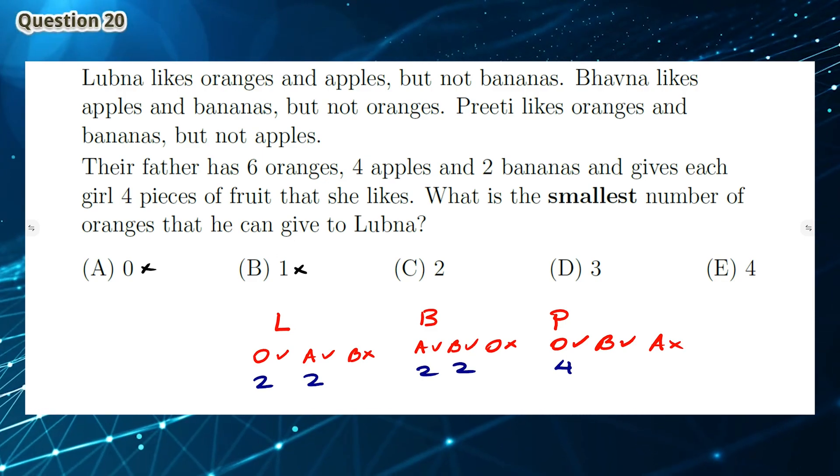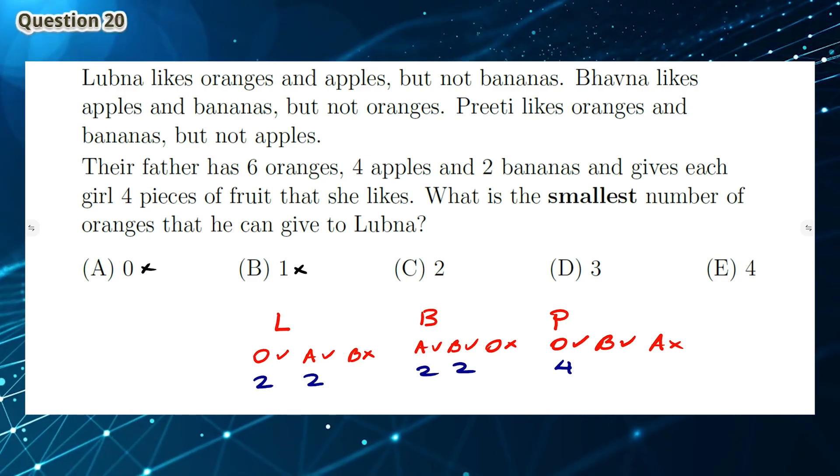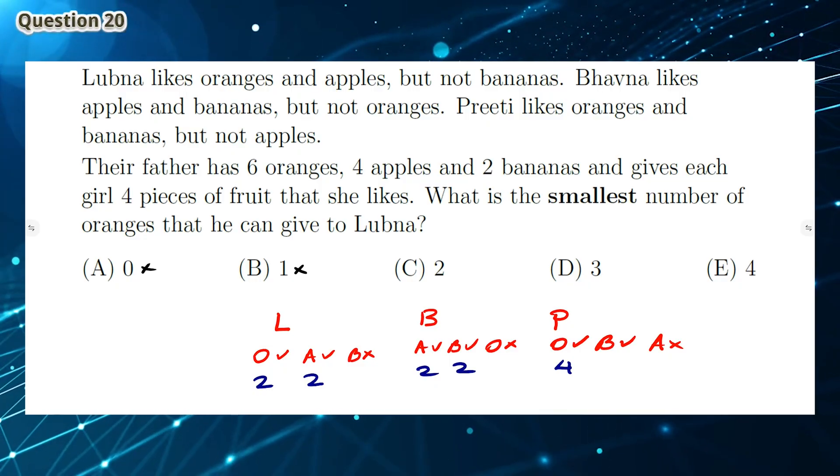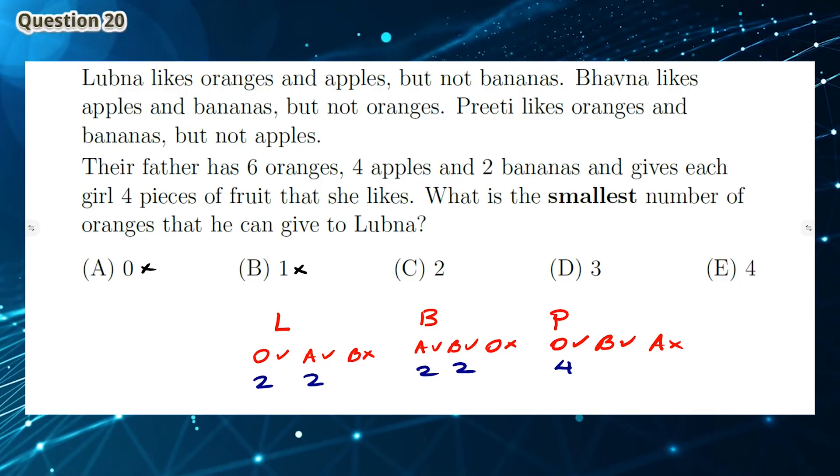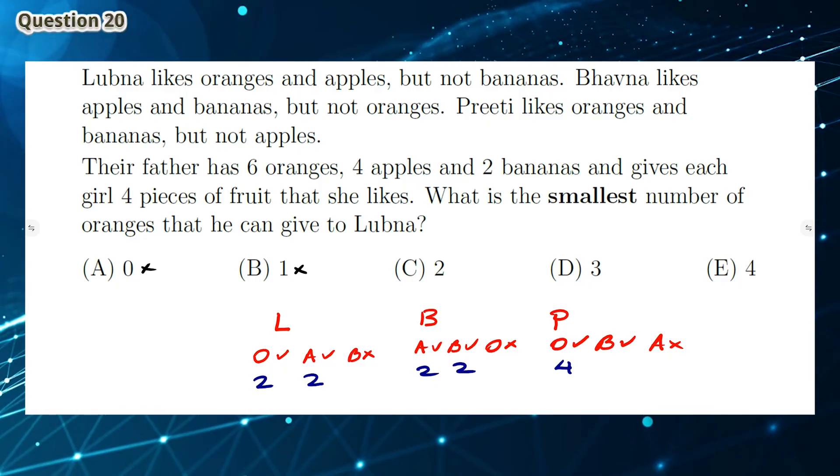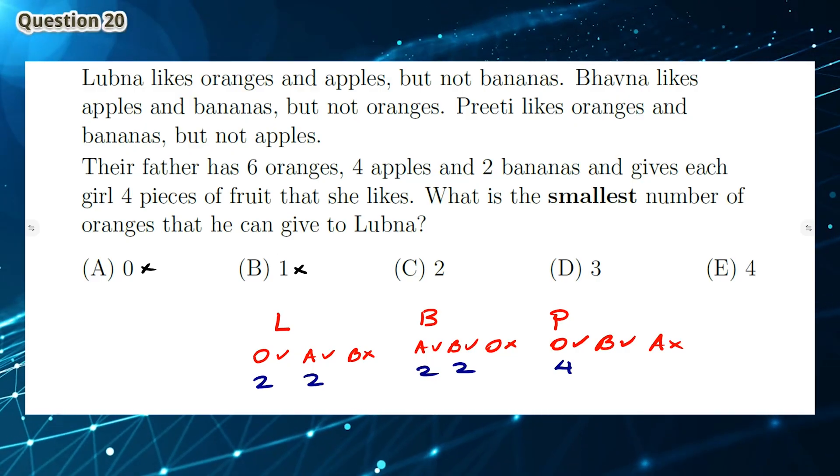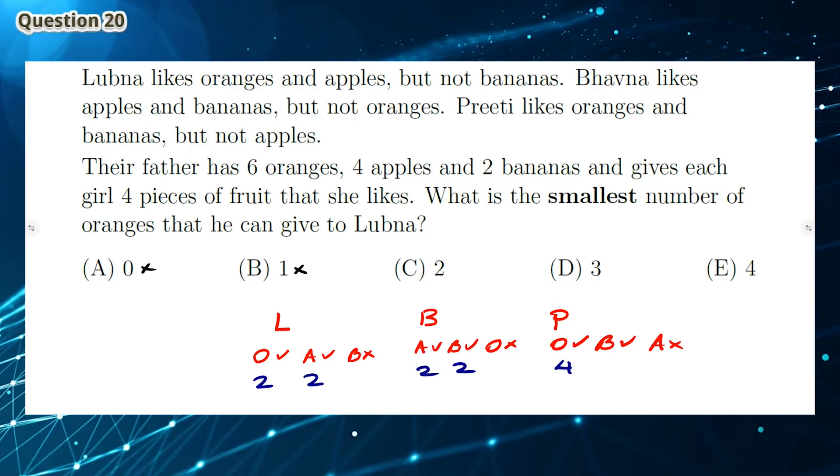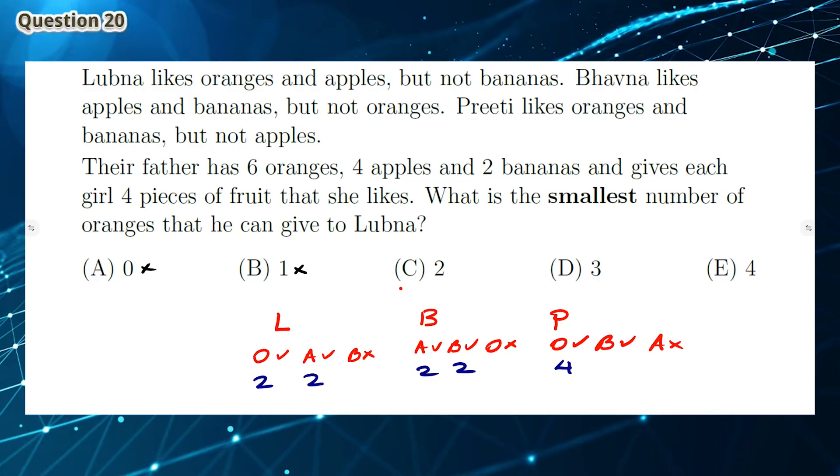As you can see, we have completed the chart. Then Preeti doesn't have to have any bananas. As the question says, each girl has 4 pieces of fruit that they like. So the smallest number of oranges that he can give to Lubna is option C, which is 2.